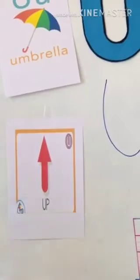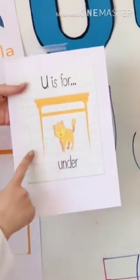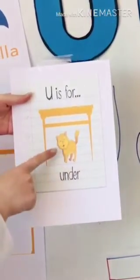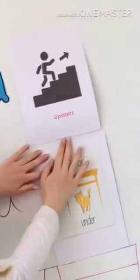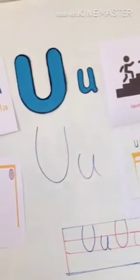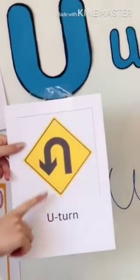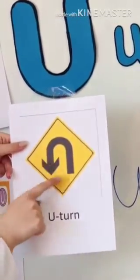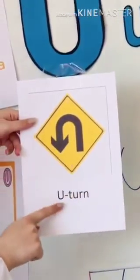Another word is under. Look at the cat is under the table. Under. Very good kids. And the last word that starts with letter U is U-turn. Look at the word U-turn.